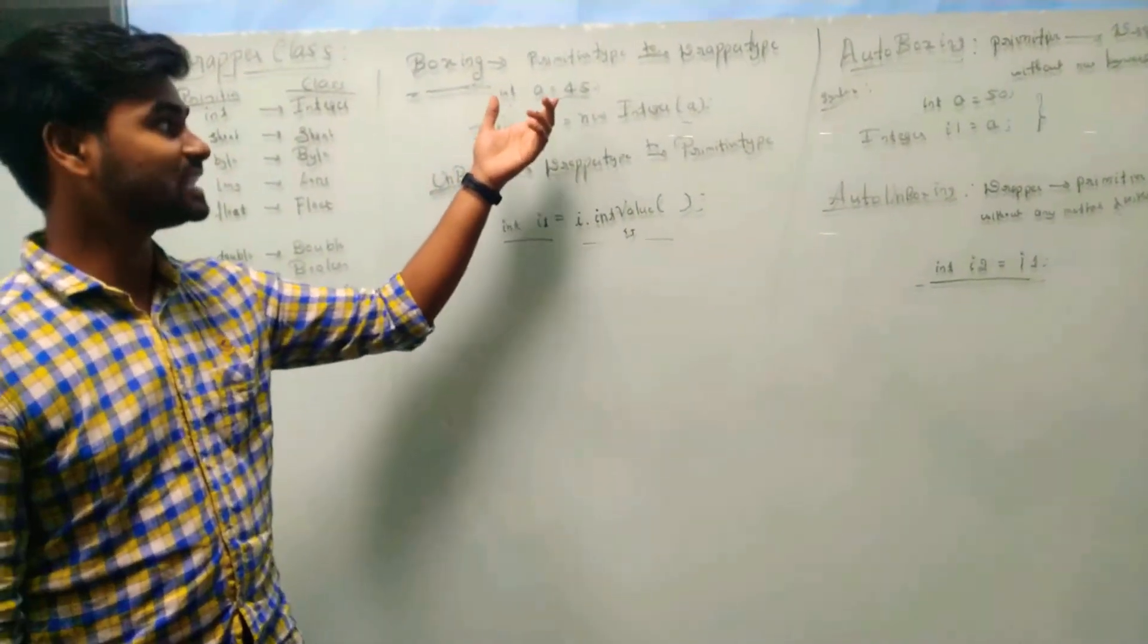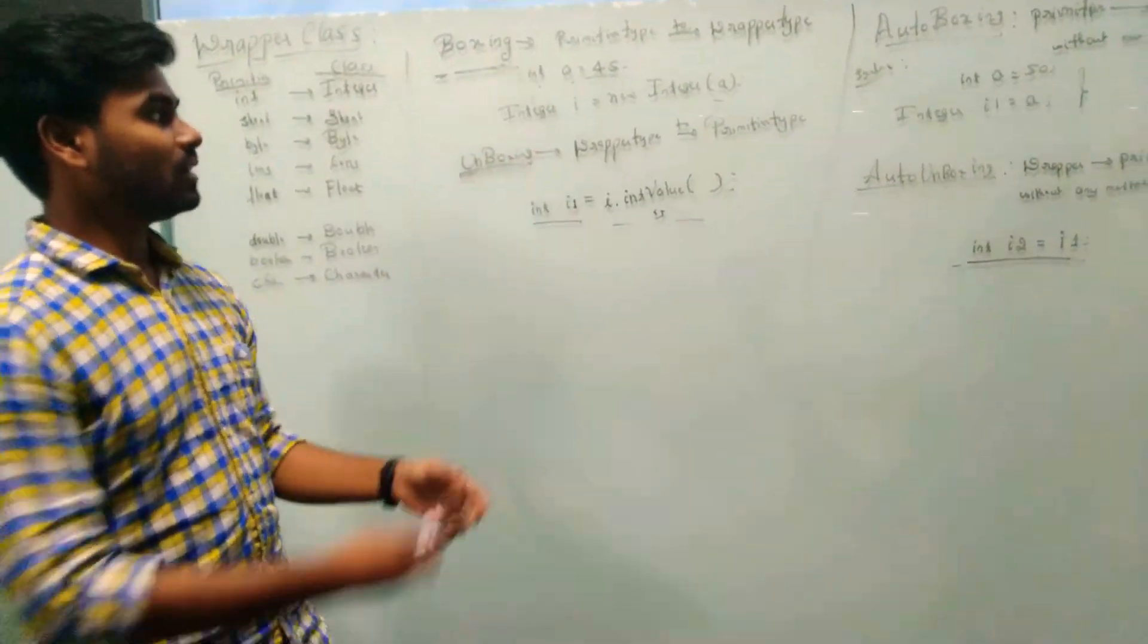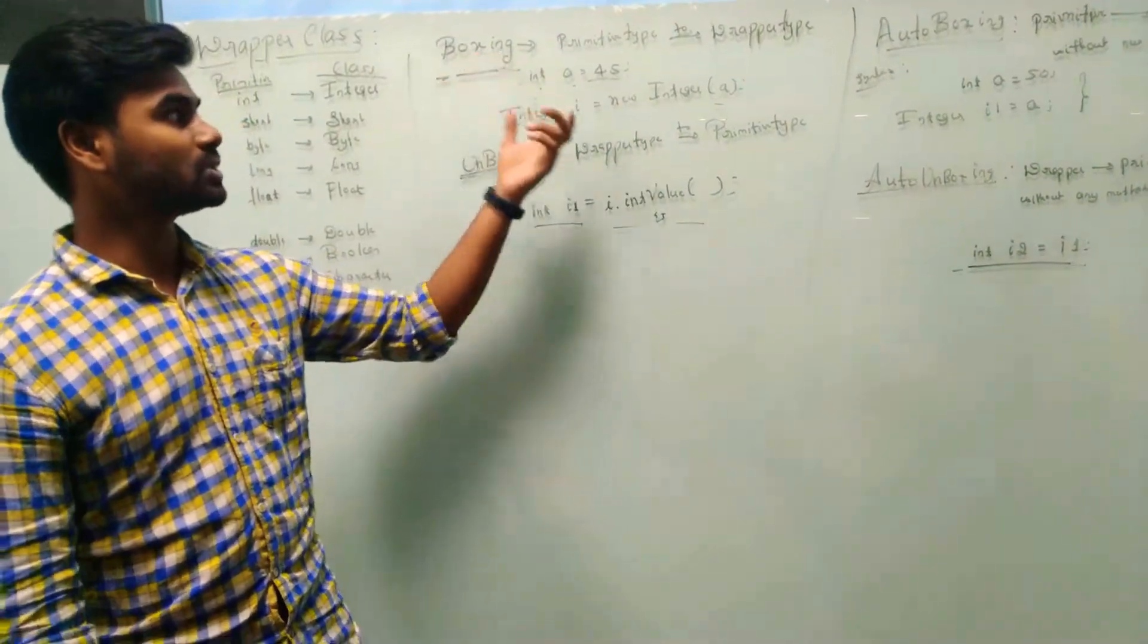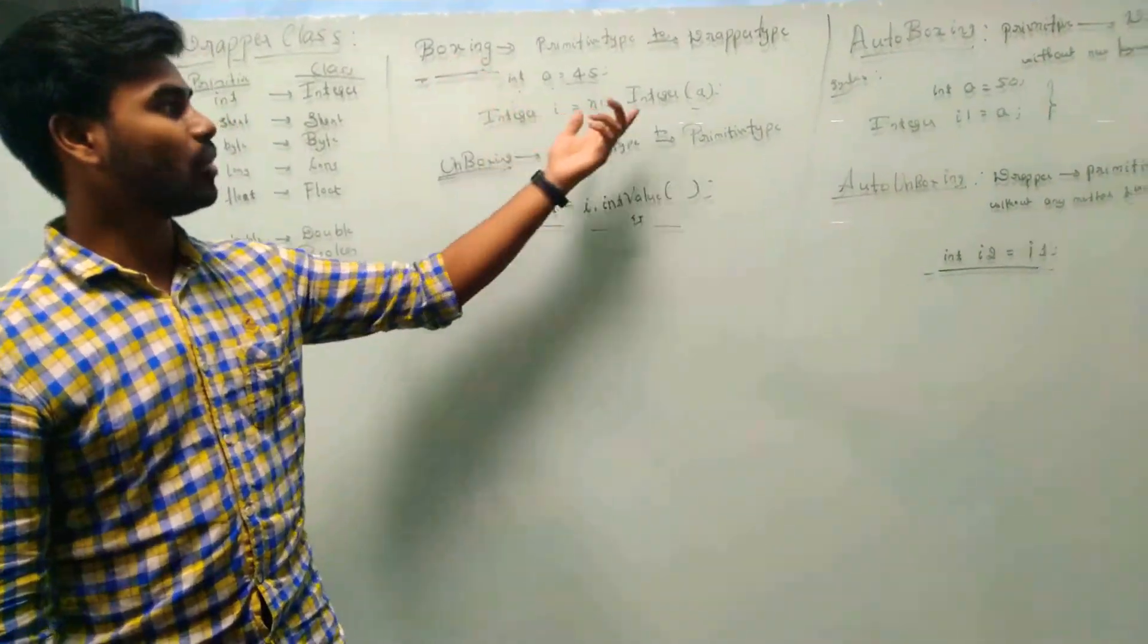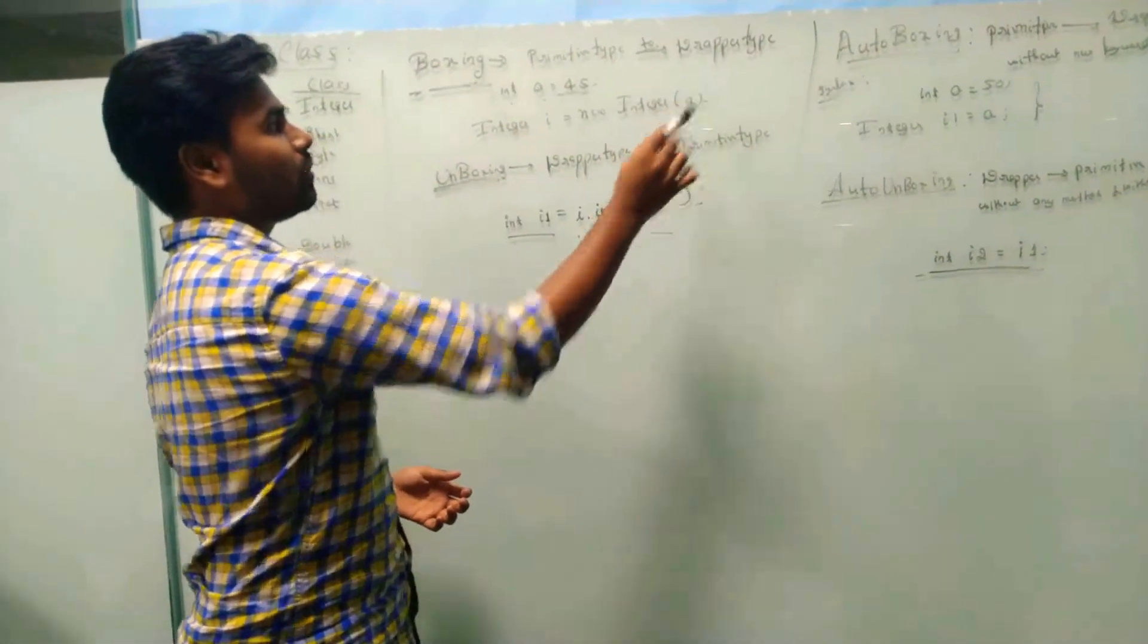First, we utilize the value. This is the syntax for boxing. First, Integer i = new Integer(). By using new keyword, we can do boxing. Here, in the integer, it has the element here.